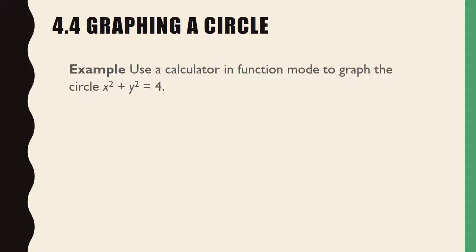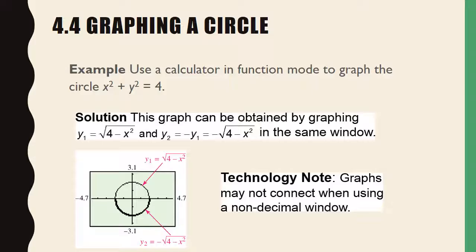Use your calculator in function mode to graph this circle — remember, you need to solve for Y to do that. Graph the square root of 4 minus x squared and negative square root of 4 minus x squared in the same window. Note that graphs may not connect when you use a non-decimal window, so if you choose zoom decimal, you will see the circle connect very nicely.